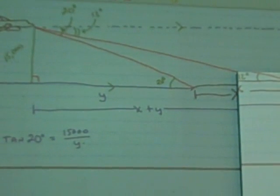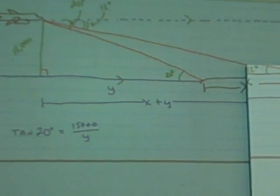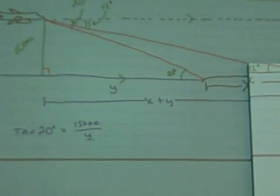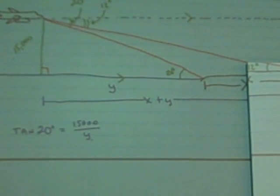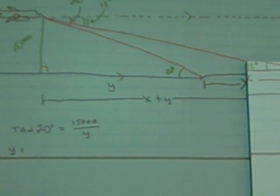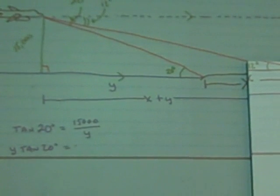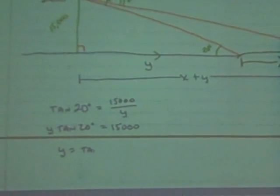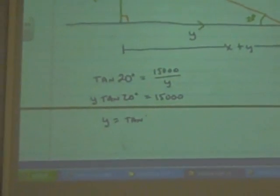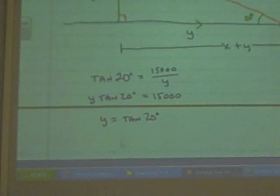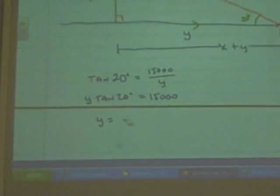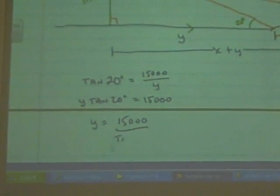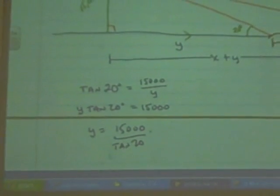Can you solve that for y? What do I got to do to solve it for y? I got to multiply by y, I get y times tan 20 degrees. What do I have to do? You don't want to do that really. Oops. Pause for a second. I got it. Now when you go to solve it.